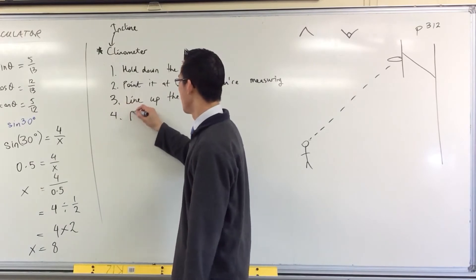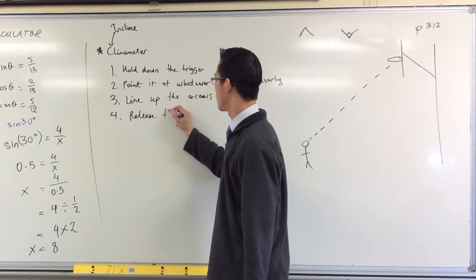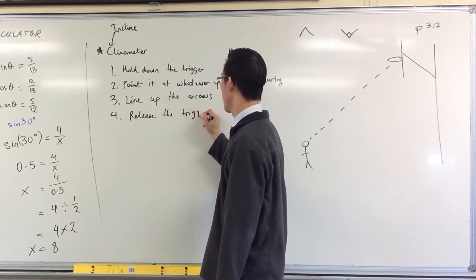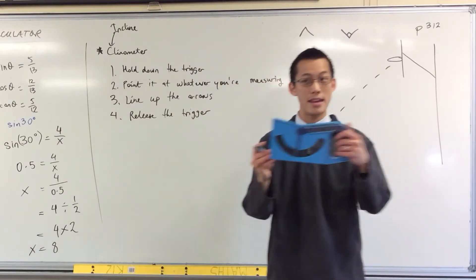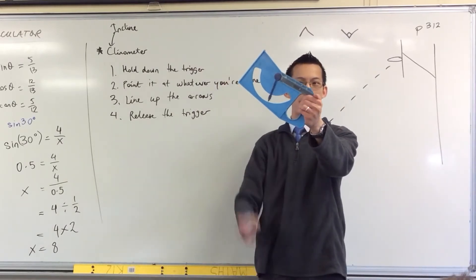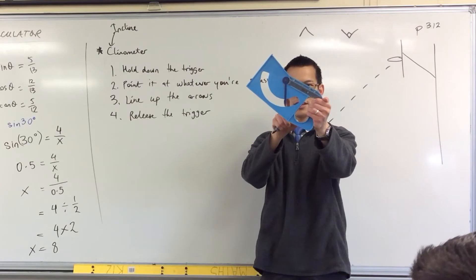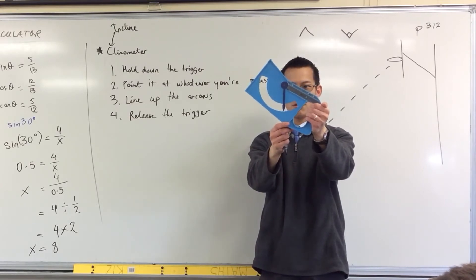Once you've lined them up, you can release the trigger. So you can look at it side on from me. So suppose I point up like that, my trigger's like that. So wait until it's still, and then you release, and now you've got the angle there.